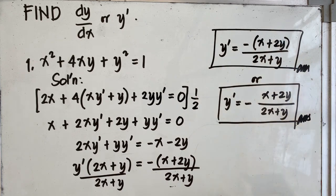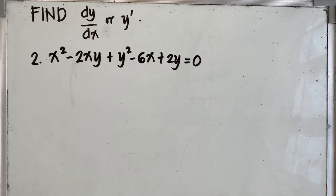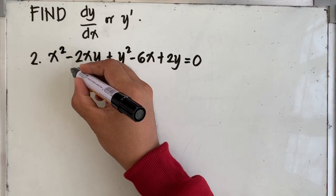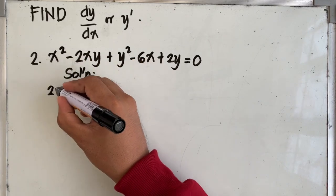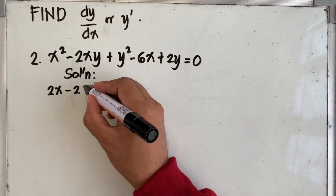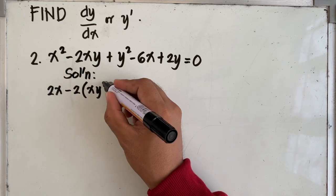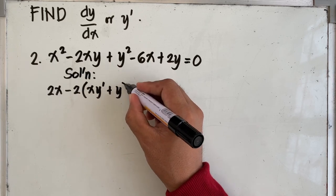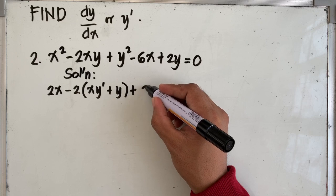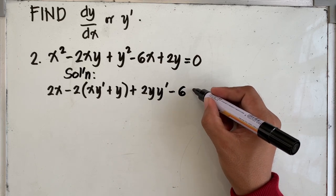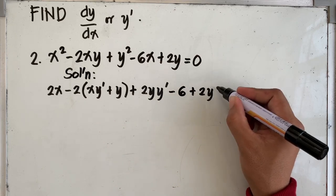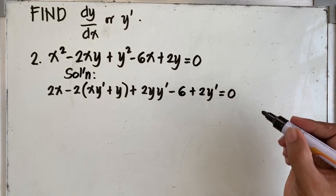Next problem, problem number 2: x squared minus 2xy plus y squared minus 6x plus 2y equal to 0. Now we differentiate. We get 2x minus, using the product rule, 2 times xy prime plus y, plus 2y plus 2yy prime minus 6 plus 2y prime equal to 0.